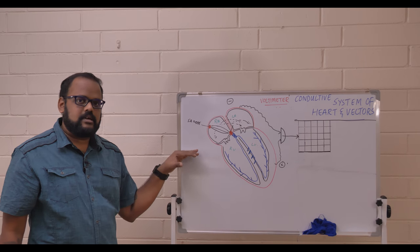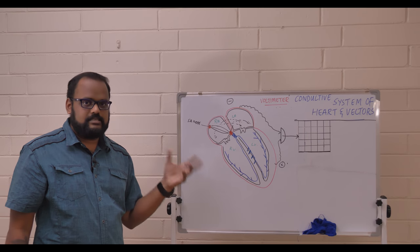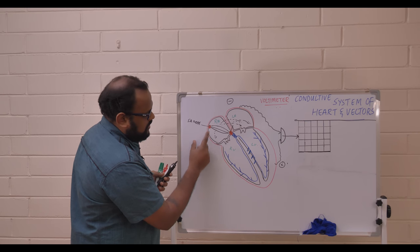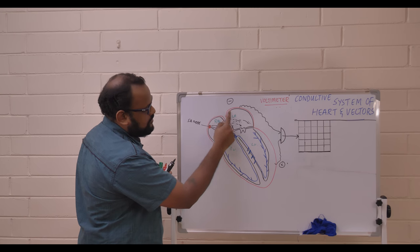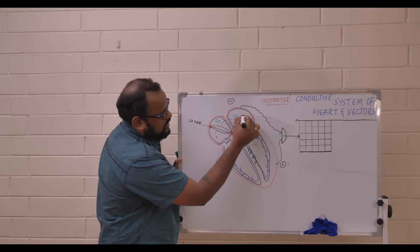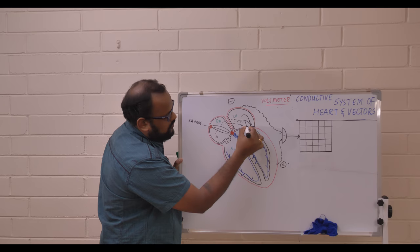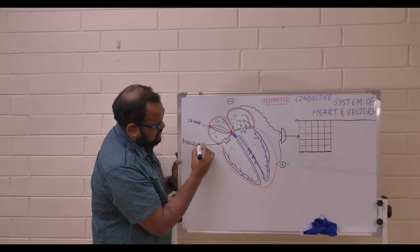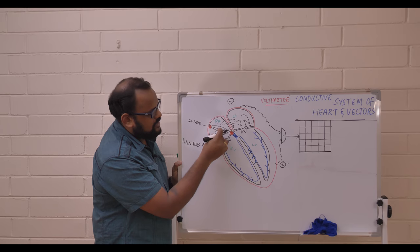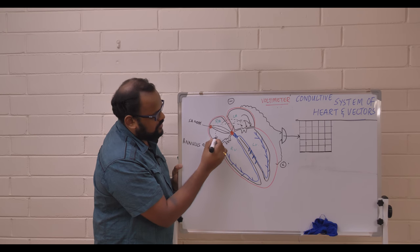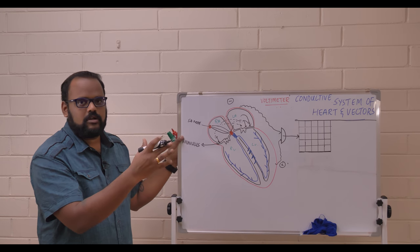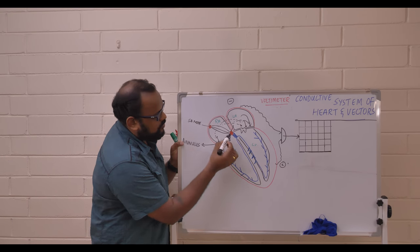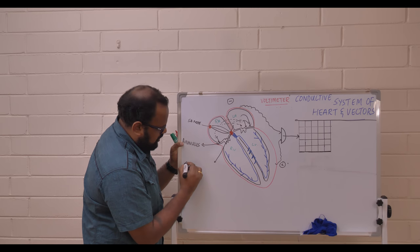Impulses travel from the SA node, depolarizing the heart. The electrical current then bounces off a structure called the annulus — a fibrous structure between the atrium and the ventricle. All cardiac action potentials hit this wall and stop, because the annulus cannot conduct impulses. The only exception is one structure called the atrioventricular node.